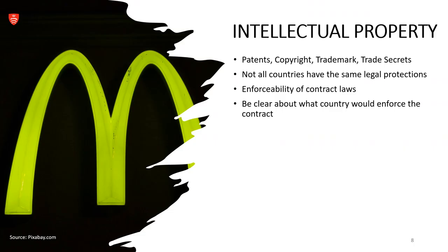Part of the legal protections through the legal system is intellectual property, where patents, copyright, trademark, and trade secrets are protected. Not all countries have the same legal protections, and enforceability of contract laws varies depending on the country. For patents, a patent is a form of intellectual property protection that gives its owner the legal right to exclude others from making, using, or selling an invention for a limited period of years, in exchange for publishing an enabling public disclosure. Patents are usually granted to inventions that are new, useful, and non-obvious.